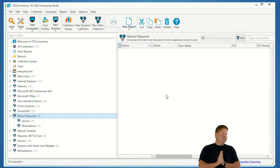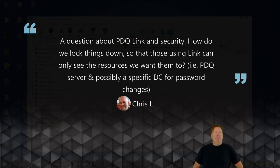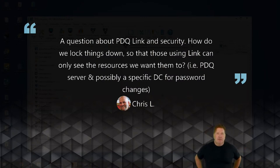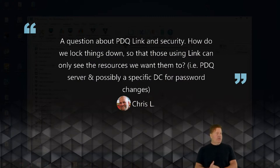Next question — dear Lex, a question about PDQ Link and security: how do we lock things down so that those using Link can only see the resources we want them to, such as the PDQ server and possibly a specific DC for password changes? Sincerely, Chris L. You'd want to do that through Network Policy Server. You can configure rules and policies within NPS that govern what resources those clients have access to when they dial into the RAS server. The Microsoft docs on that are pretty straightforward.